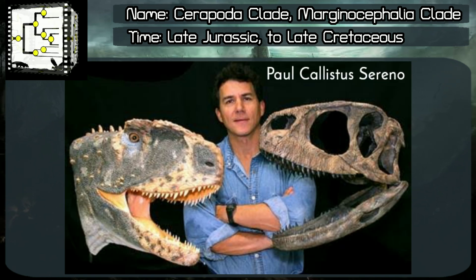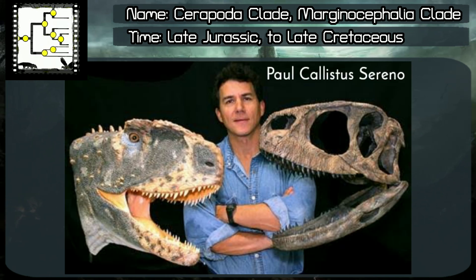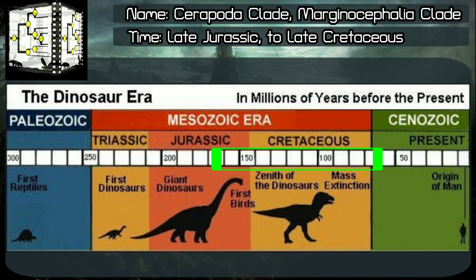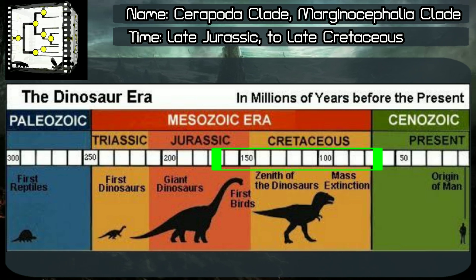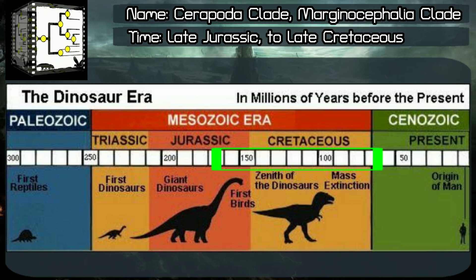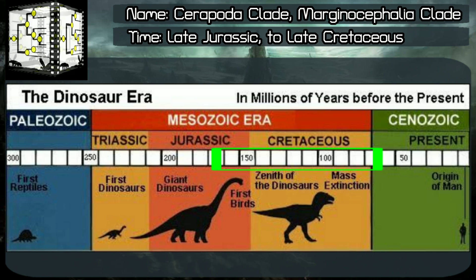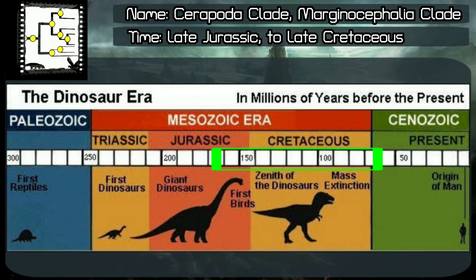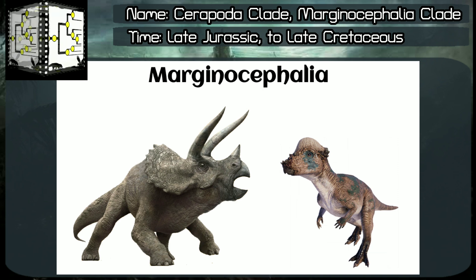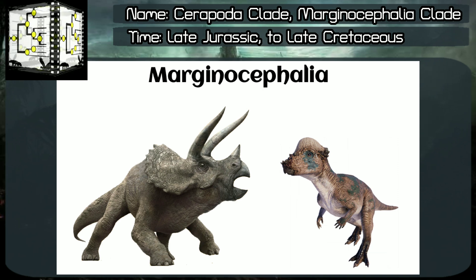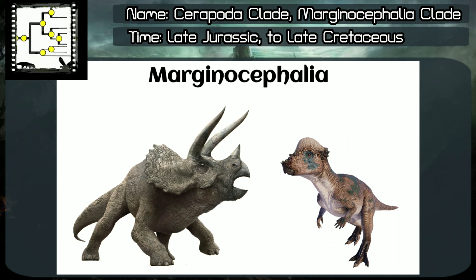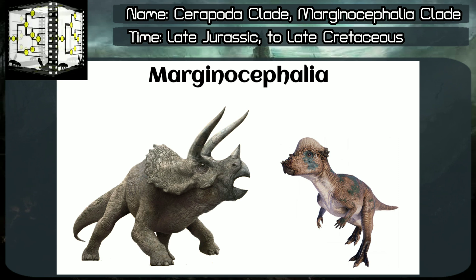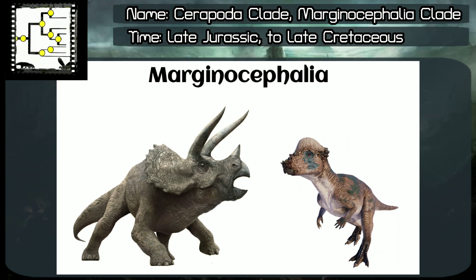Marginocephalia clade, classified by Paul Callistus Sereno, year 1986. Time range: Phanerozoic Aeon, Mesozoic Era, late Jurassic to late Cretaceous periods, something around 162 to 66 million years ago. From Latin, Marginocephalia means margin head. They are characterized by a bony shelf or margin at the back of the skull.